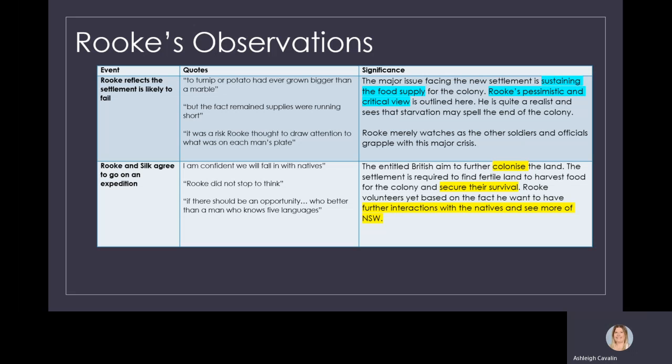Let's have a look at Rook's observations around the campsite. Rook reflects that the settlement is likely to fail. The major issue facing the new settlement is sustaining the food supply for the colony. Rook has a very pessimistic and critical view. He's quite a realist and sees that starvation might spell the end of the colony. However, Rook merely watches as other soldiers and officials grapple with this major crisis.